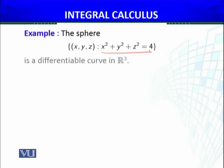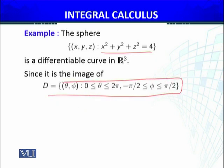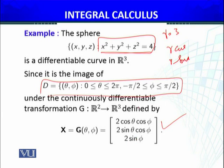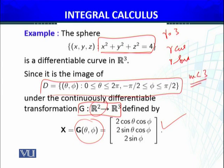The sphere is also a differentiable surface in R³, since it is the image of a certain compact set under a continuously differentiable transformation defined by the standard spherical parametrization — G(θ, φ) = (R cos θ, R sin θ, ...) with radius R. Since we are able to find a continuously differentiable function such that the sphere is the image of this transformation, we conclude that the sphere is a differentiable surface.